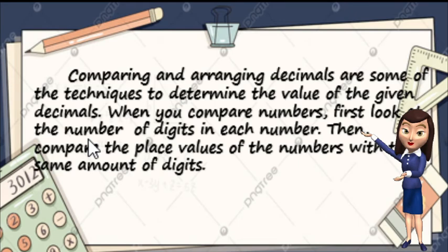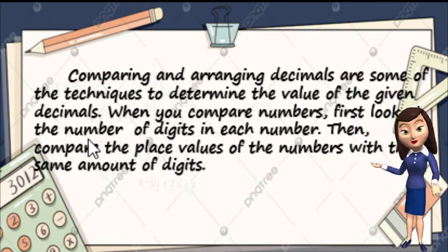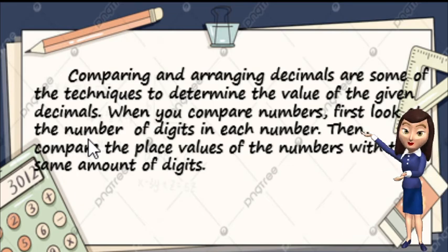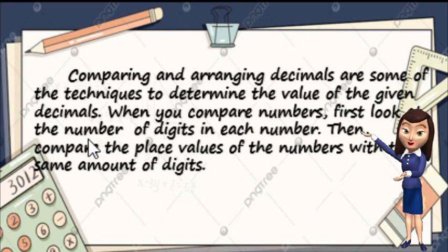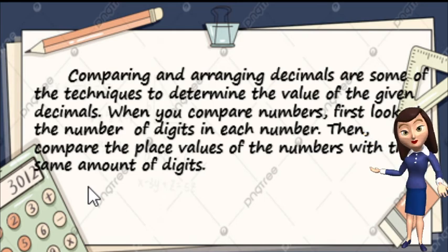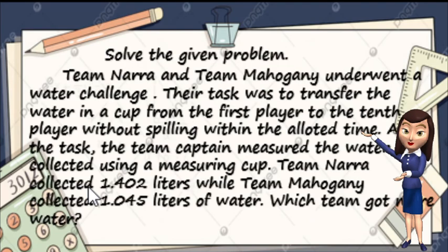Comparing and arranging decimals are some of the techniques to determine the value of the given decimals. When you compare the numbers, first look at the number of digits in each number, then compare the place values of the numbers with the same amount of digits.